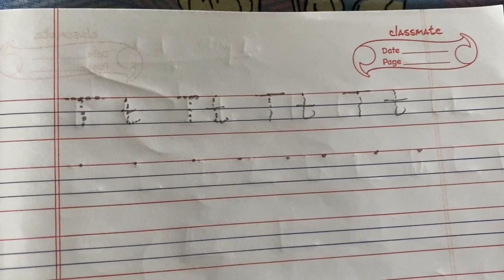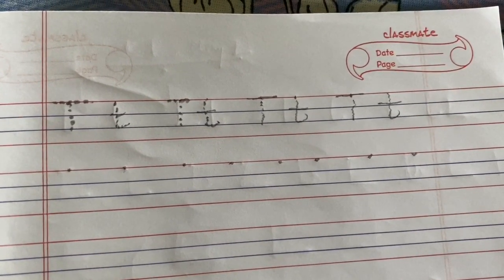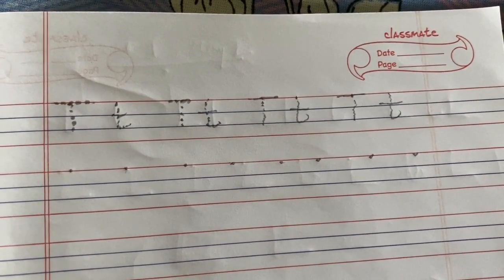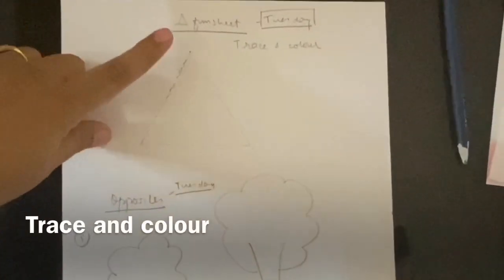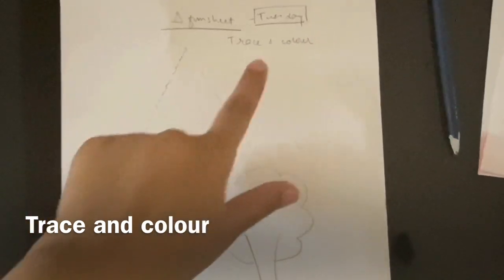On day 2, you have to trace the letter T and write it. Always focus on the four-line notebook so that they will practice as they do in school. Since the alphabet writing is done, you can keep the number activity more relaxed — you can write numbers on a rice tray or with paint, so it will be a relaxed activity. After that, you can introduce the triangle on day 2 by giving a dotted triangle fun sheet — they will trace and color it.